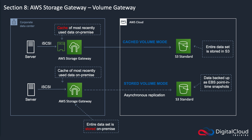The second type is Volume Gateway, and there are two different configurations shown on screen: cached volume mode and stored volume mode. The key difference from File Gateway is that this is block-level — we're talking about iSCSI, not SMB or NFS. This is essentially attaching a disk to your server using iSCSI, so it's a block-level protocol.